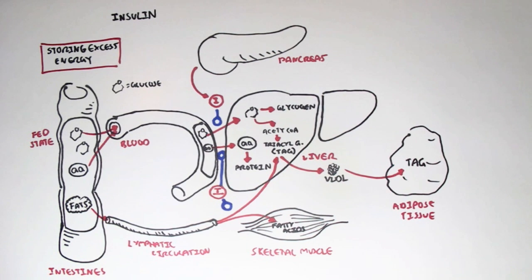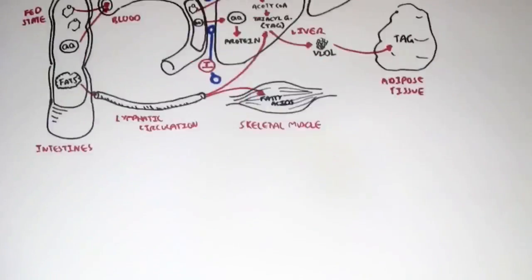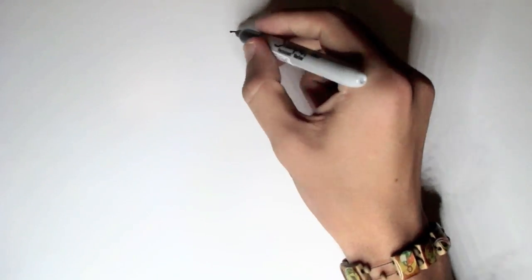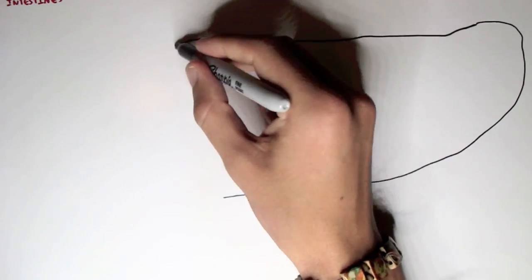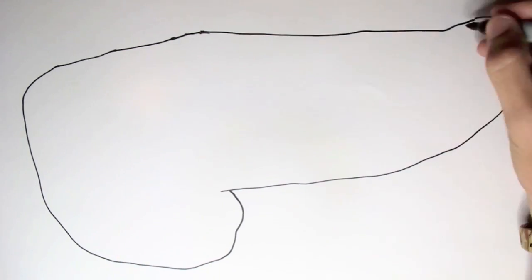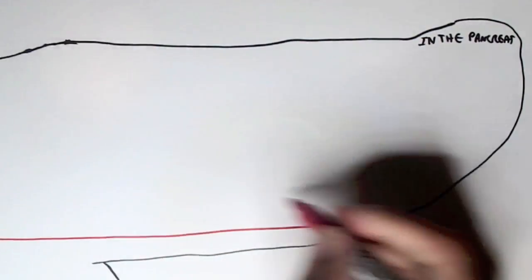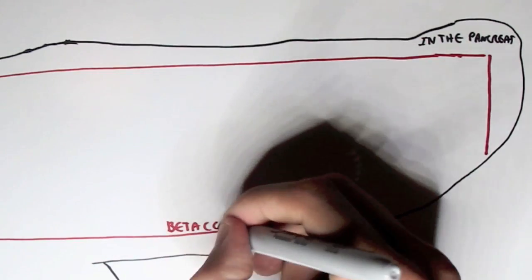As you can see, insulin has the major role of storing excess energy during the fed state, when we have a lot of macromolecules running through our intestines that need storing. Now let's look at insulin synthesis, which occurs in the pancreas.